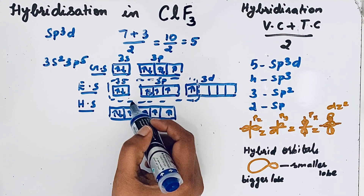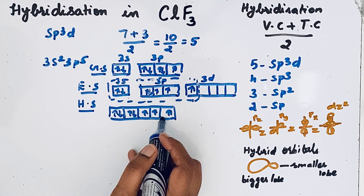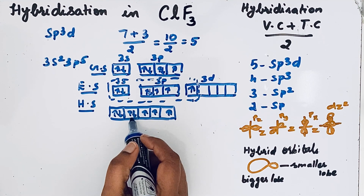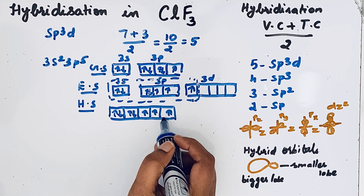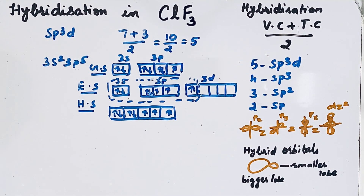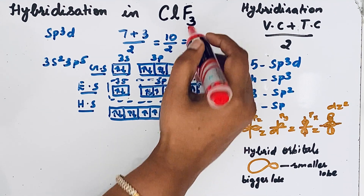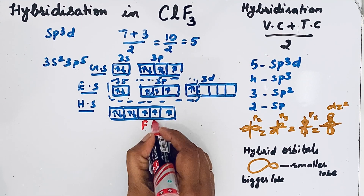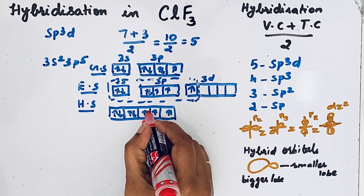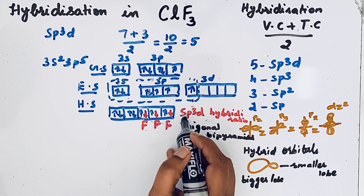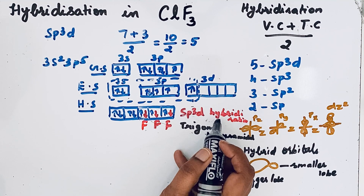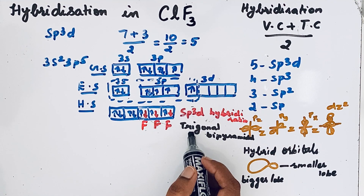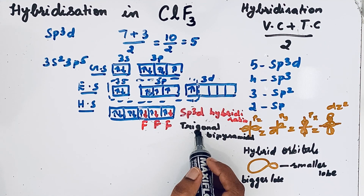All these orbitals intermix to form sp3d hybridization. You can see that two completely filled orbitals and three half-filled orbitals are present. These half-filled orbitals accept electrons from fluorine and form three covalent bonds. So the hybridization is sp3d hybridization.